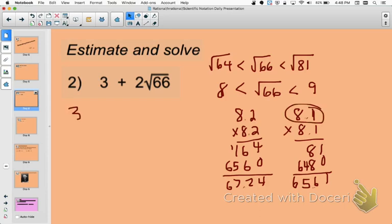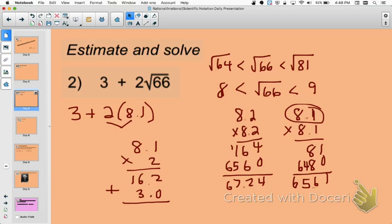So I'm going to rewrite my expression now as 3 plus 2 times 8.1. Okay, remember your order of operations, which tells us that we need to multiply first before we add. So I'm going to do 8.1 times 2, which gives me 16.2. And now I'm going to take that plus 3, which I'm going to write as 3.0. Now going ahead and adding up my columns. Put in my decimal, keep it lined up. My solution is 19.2.